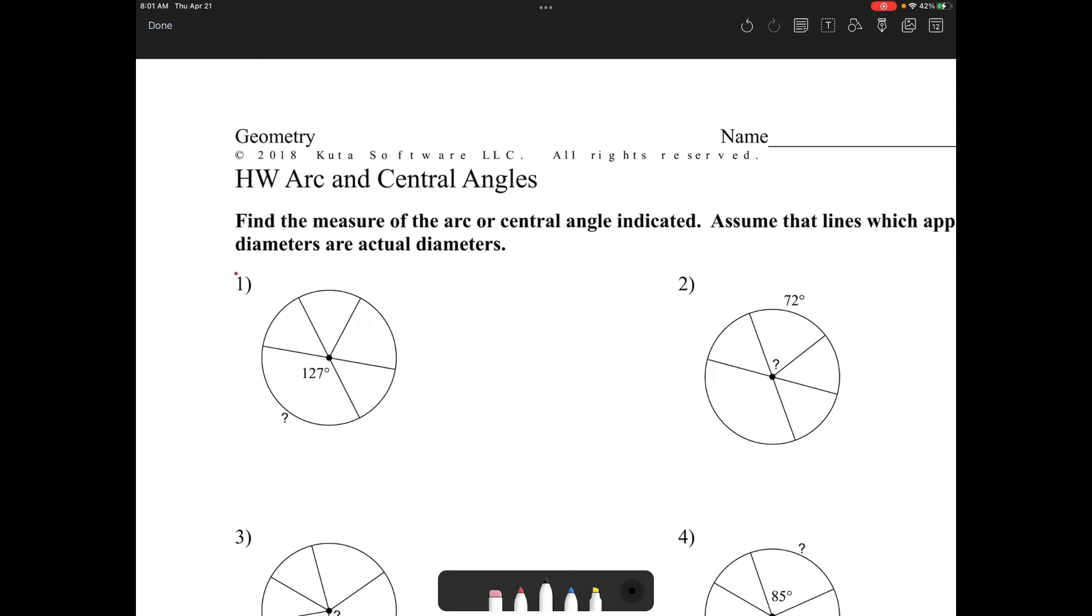So just recall that a central angle, the angle and the arc are congruent. And what makes the central is the vertex is in the center of the circle. The vertex lies in the center of the circle, and when that happens, the angle formed and the arc are congruent. So therefore, the answer to this, what is this arc measure, would be 127.